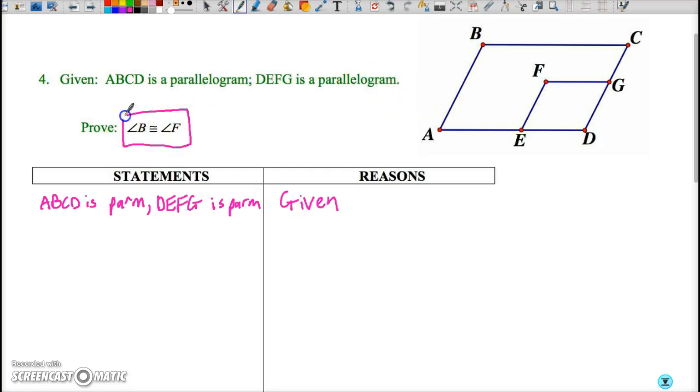So in this particular case you can see that what we're after is a proof that angle B and angle F are congruent and so the property of parallelograms that we're interested in is the one that speaks to the congruency of angles. We know that angle A and angle C would be congruent because both pairs of opposite angles in a parallelogram are congruent. We would know that angle B and angle D are congruent and that's in a parallelogram ABCD.